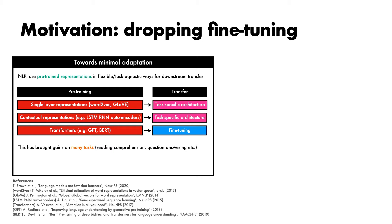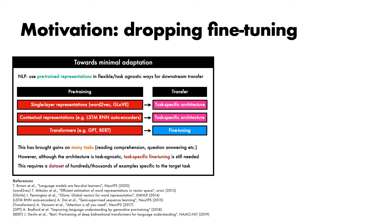This transition has brought substantial gains on many NLP tasks like reading comprehension, question answering, textual entailment and others, and has led to many improved algorithm designs and architectures. However, although the architecture is task-agnostic, task-specific fine-tuning is still required on task-specific datasets, typically involving either hundreds or thousands of examples that are specific to the target task. We'd like, if at all possible, to remove this requirement for fine-tuning, for several reasons.